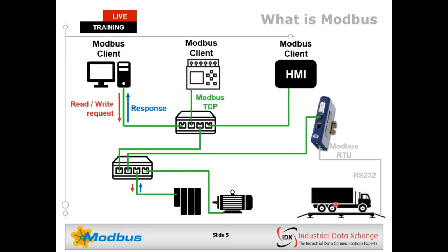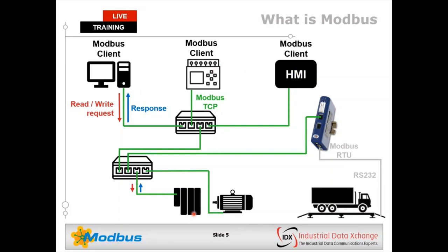It provides a client-server communication between devices — a request-response type protocol. A Modbus client initiates communication by sending a read or write request to any device in the network. That device receives the request and, if it can, responds with the information. Within Modbus TCP, you can have multiple masters interfacing with a single slave module. Modbus RTU is different — in Modbus RTU, you can only ever have one master on the entire network. That's very important.